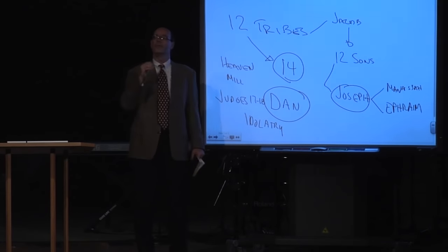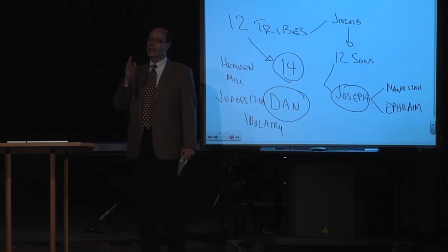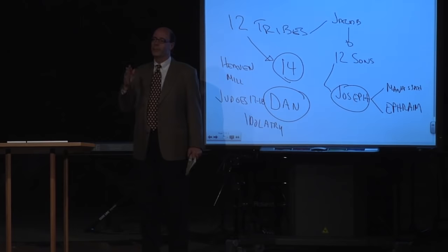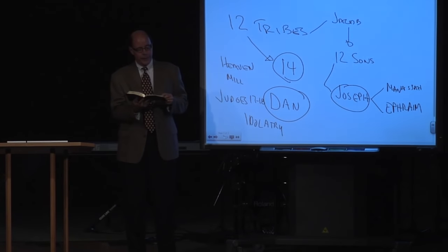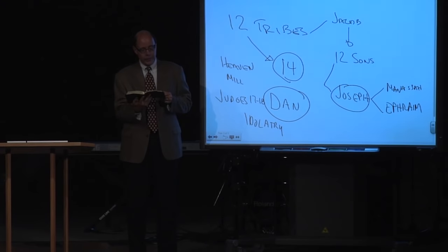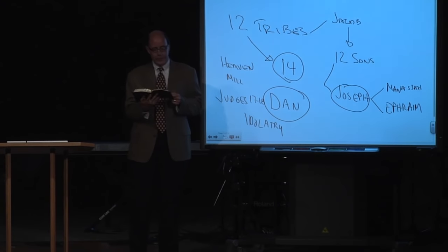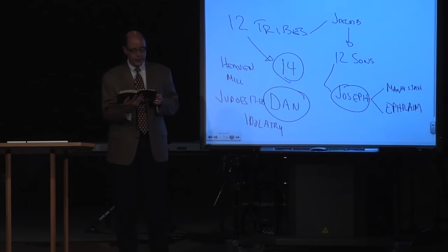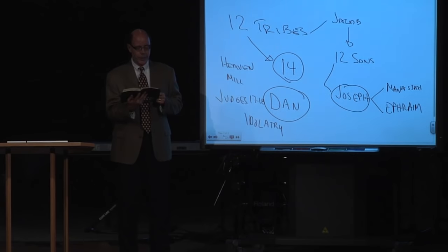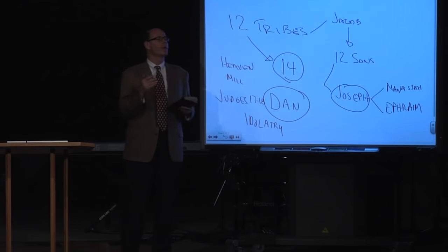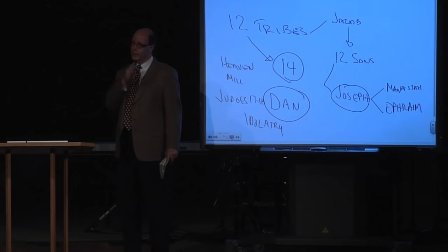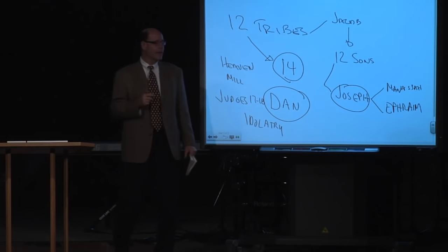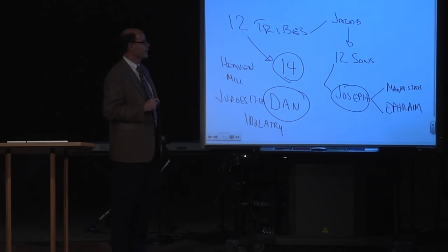Originally, Dan's tribal allotment was down south, closer to Jerusalem, but they didn't like it there. So the tribe of Dan moved all the way north, above the Sea of Galilee. Verse 27 of chapter 18 describes how they went to Laish, in the northwest of the land of Israel.